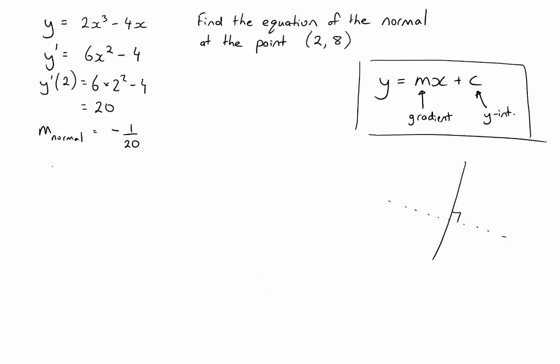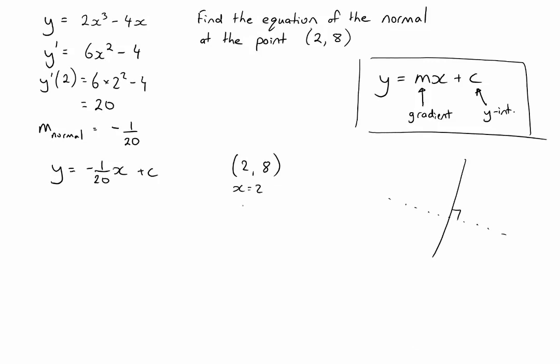So far our equation looks like this: y equals negative 1 over 20x plus c. We know a point that lies on that line - the point (2,8). At that point, x is 2 and y is 8.